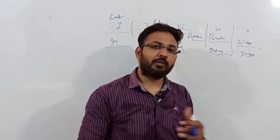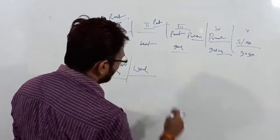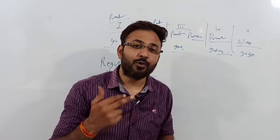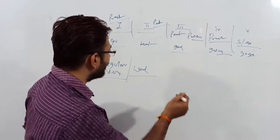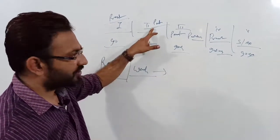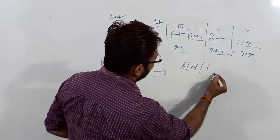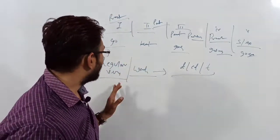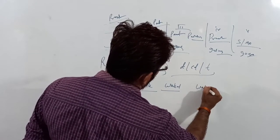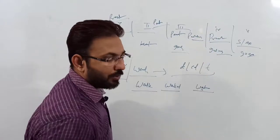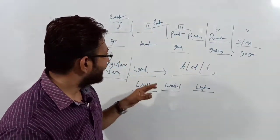Now let's talk about regular verbs and irregular verbs. Regular verbs are also called weak verbs. For regular verbs, the second and third forms — past and past participle — are formed by adding -d, -ed, or -t to the base form. For example, the verb 'walk': walked, walked, walking, walks.